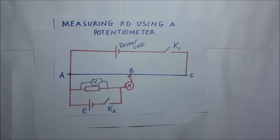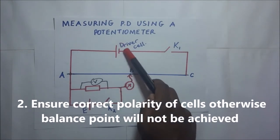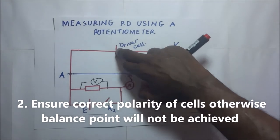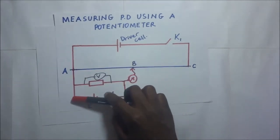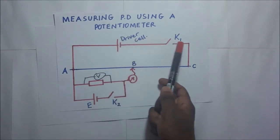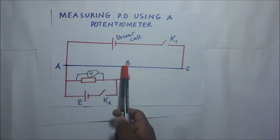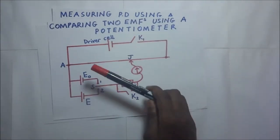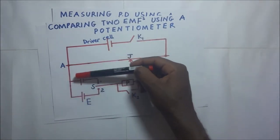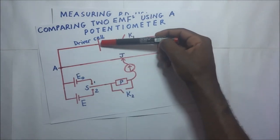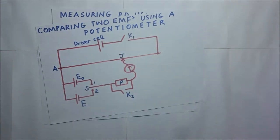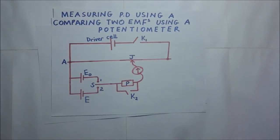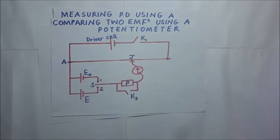You need to ensure correct polarity of cells. The positive terminal of the driver cell is always connected to the positive terminal in the secondary circuit at point A, and the negative terminal connects at the jockey end at point J. If you do not connect these polarities the correct way, you won't be able to obtain the correct balance point.